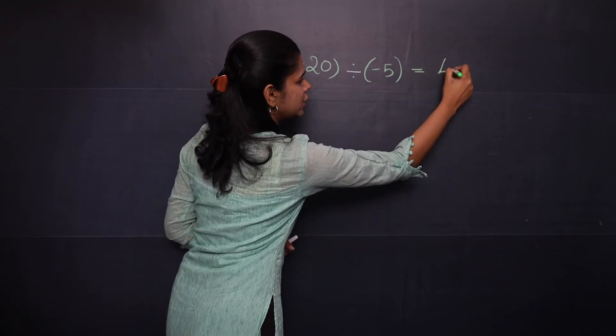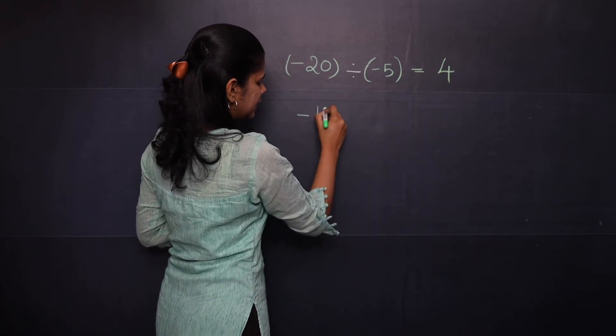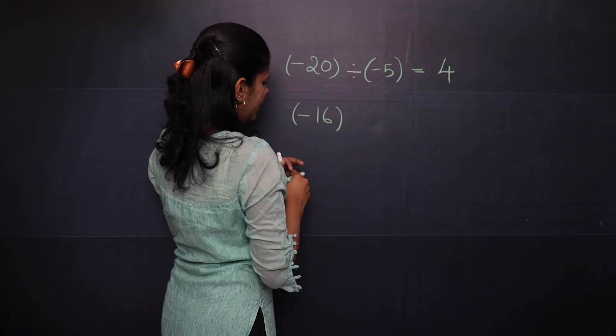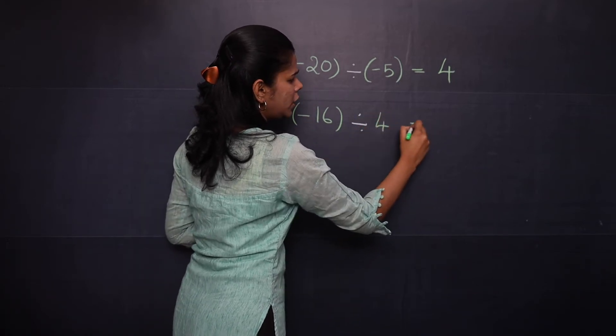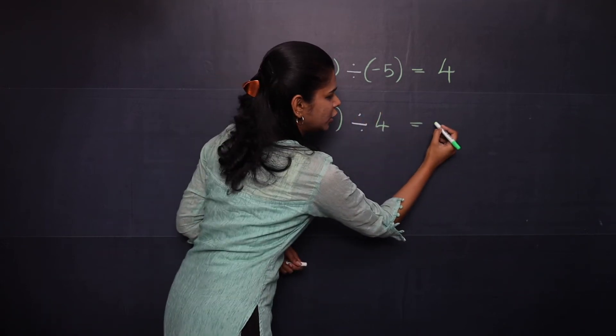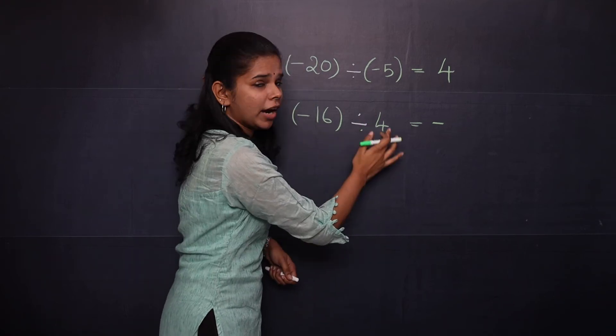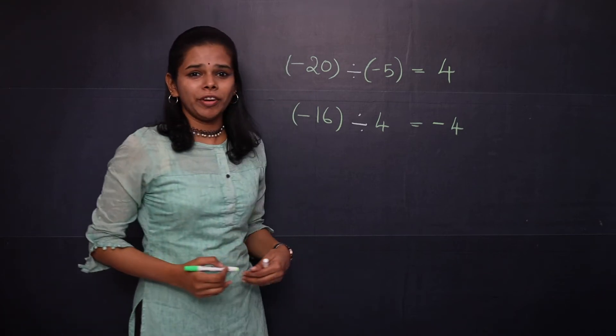Now when you take negative 16 divided by positive 4, here you have opposite signs, so your answer should have a negative sign. And 16 divided by 4 will give you 4.